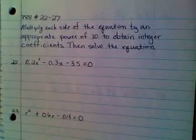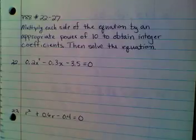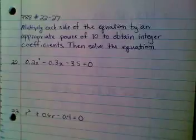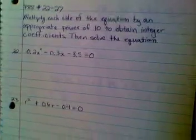Hi again. We are on page 88, numbers 22 through 27. It says, multiply each side of the equation by an appropriate power of 10 to obtain integer coefficients. Then solve the equation.